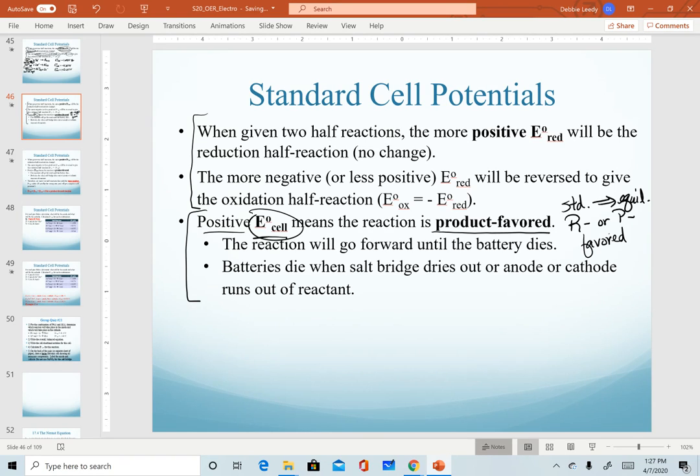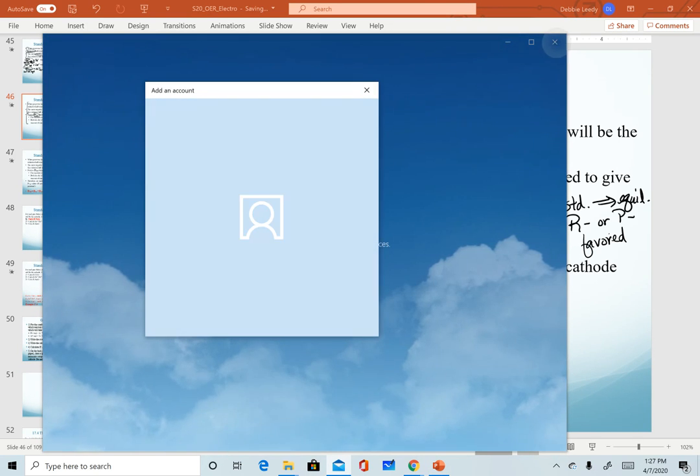So if we get a positive standard cell potential, that means we have a product favored battery. Our reaction will go forward to reach equilibrium until our battery dies. So it turns out batteries die once they reach equilibrium.